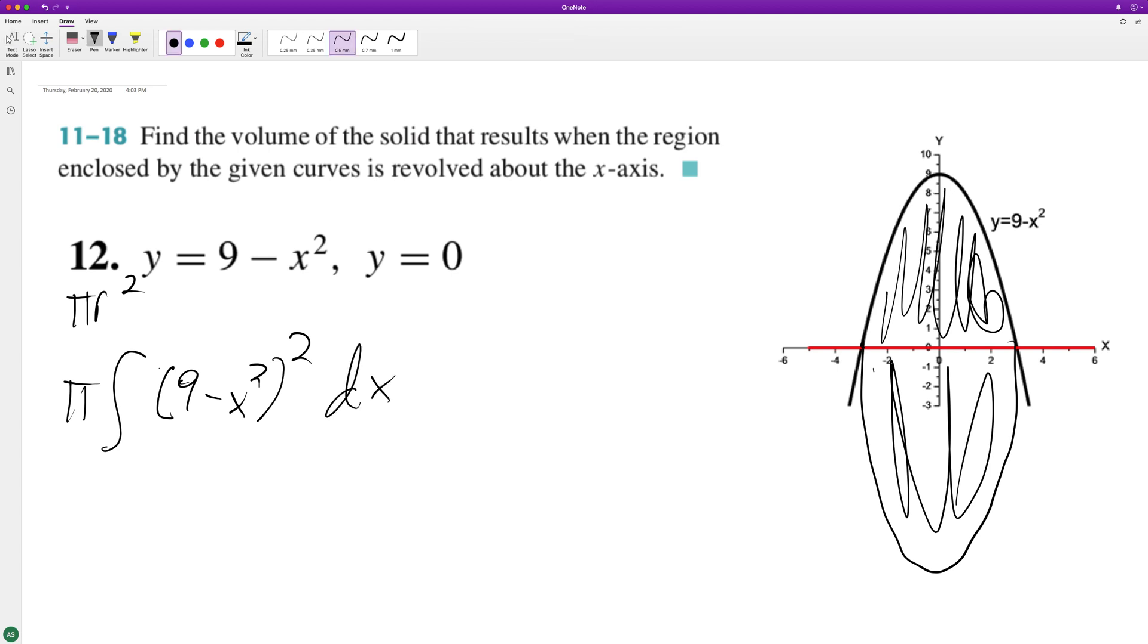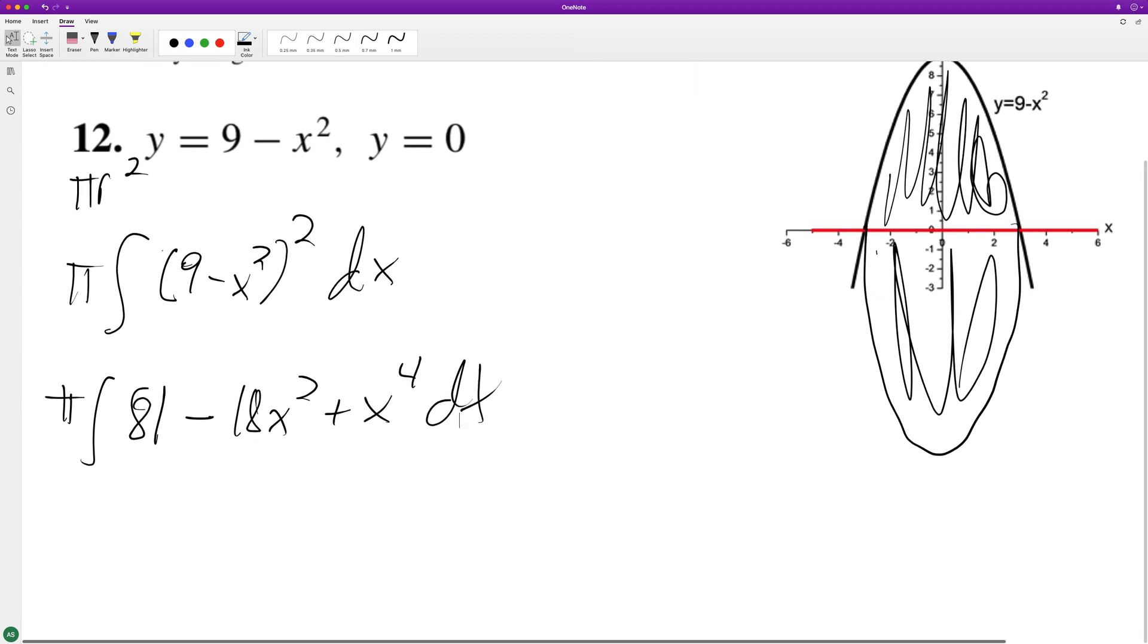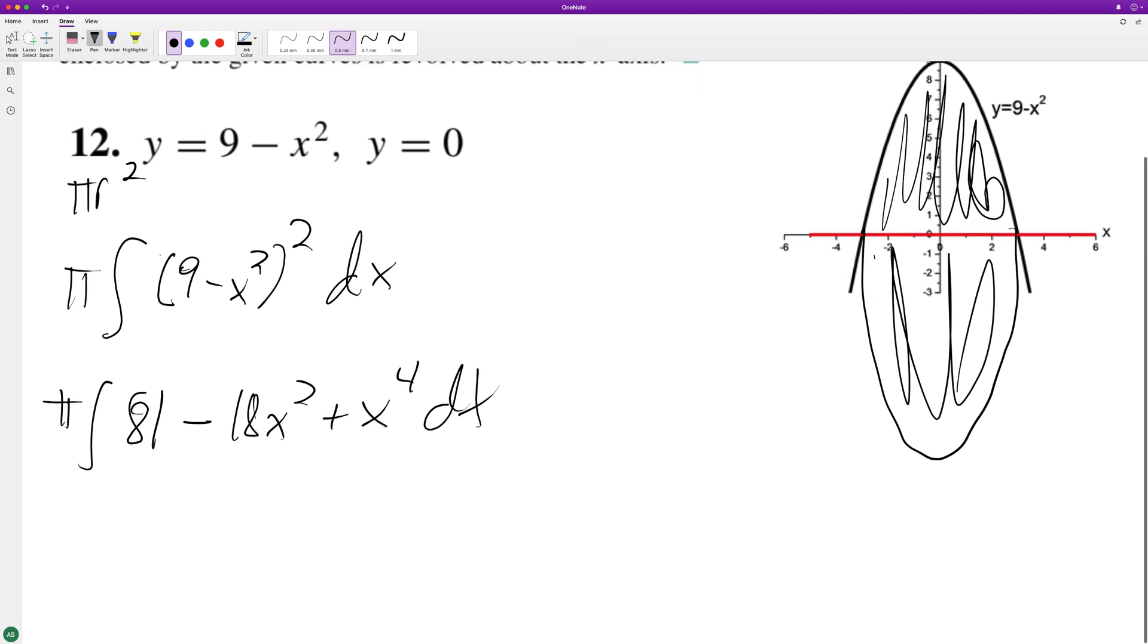So we're going to have pi times 81 minus 18x squared plus x to the fourth dx. Sweet pi.